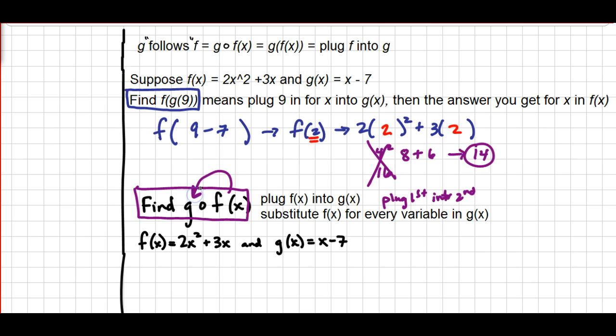So we're gonna plug F into G. Wherever I see a variable in G, I'm gonna replace it with the function F of X. So what you want to do is focus on the second function, focus on G and what it looks like. G looks like a variable minus 7, so instead of the variable we're gonna leave an empty set of parentheses. You could also use an empty blank, and in that empty space we're gonna plug all of F.